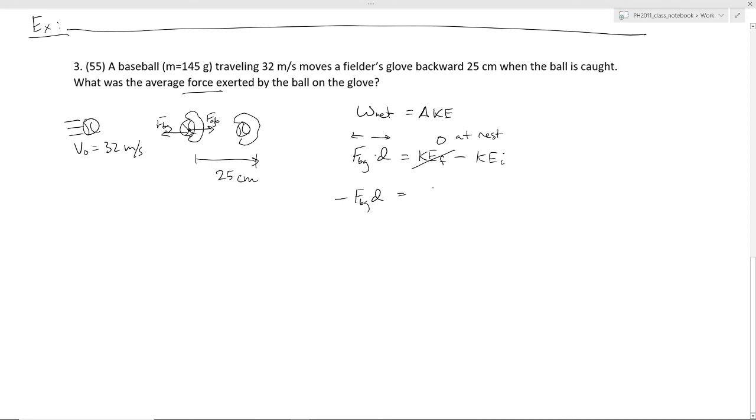Let me just write this out totally. To explain in more detail why this would be zero is because one half mass v final squared. Well, when it comes to rest, this v final will be zero. So this will be zero minus one half mv initial squared.